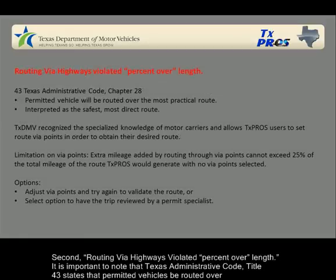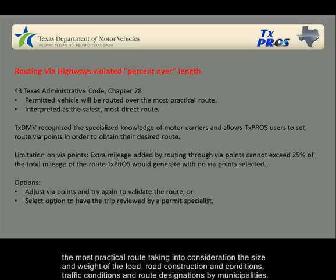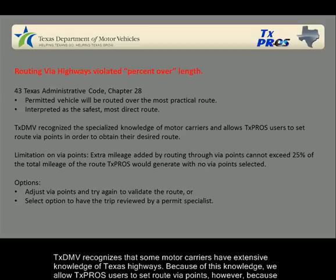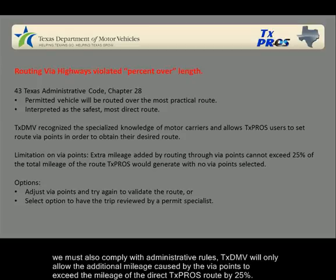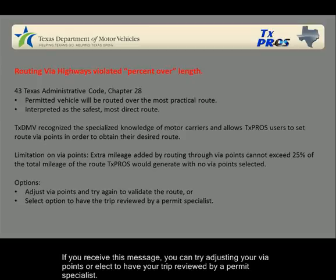Second: 'Routing via highways violated percent over length.' It is important to note that Texas Administrative Code Title 43 states that permitted vehicles be routed over the most practical route, taking into consideration the size and weight of the load, road construction and conditions, traffic conditions, and route designations by municipalities. Texas DMV recognizes that some motor carriers have extensive knowledge of Texas highways. Because of this knowledge, we allow TexPros users to set route via points. However, because we must also comply with administrative rules, Texas DMV will only allow the additional mileage caused by the via points to exceed the mileage of the direct TexPros route by 25%. If you receive this message, you can try adjusting your via points or elect to have your trip reviewed by a permit specialist.